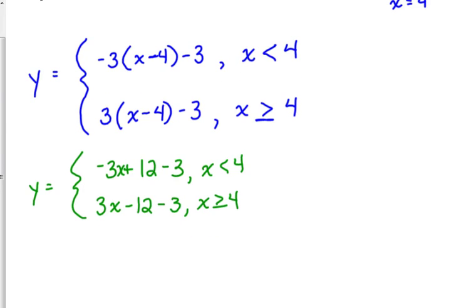And then final step, cleaning these up. Combine those constants. 12 minus 3 is 9. Negative 12 minus 3 is negative 15. Now, if you did number 7, those should be the two linear functions that you got when you wrote equations for the left side and the right side of the absolute value function.